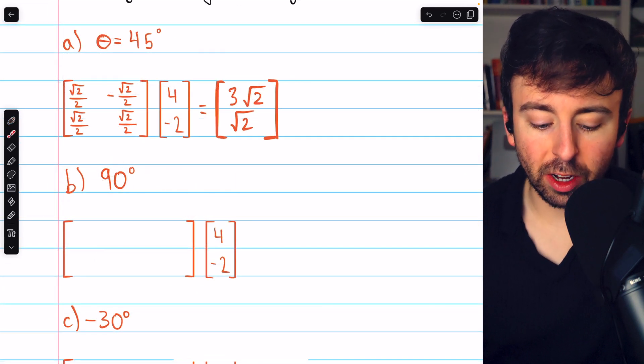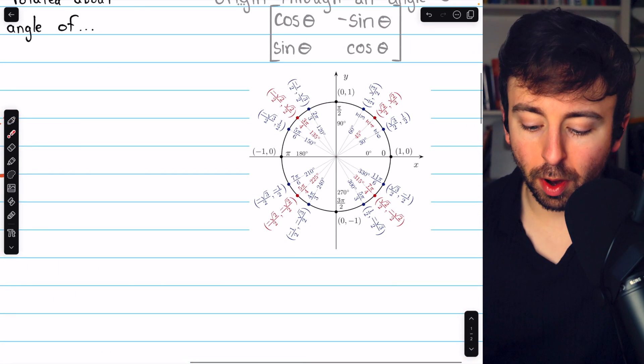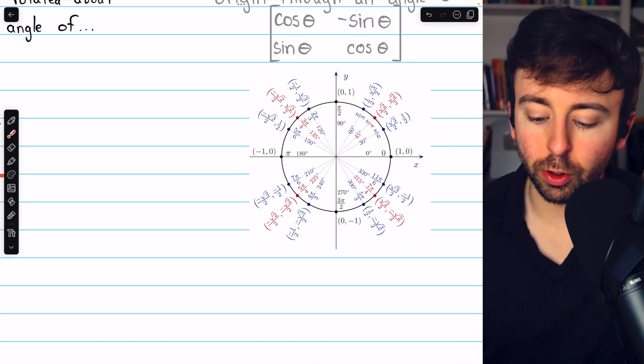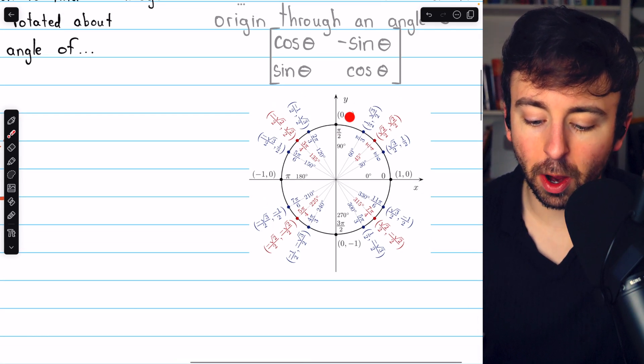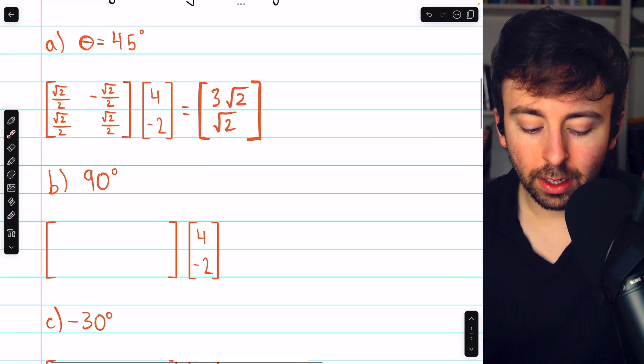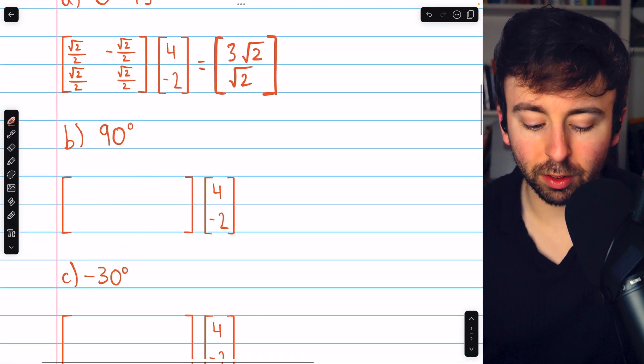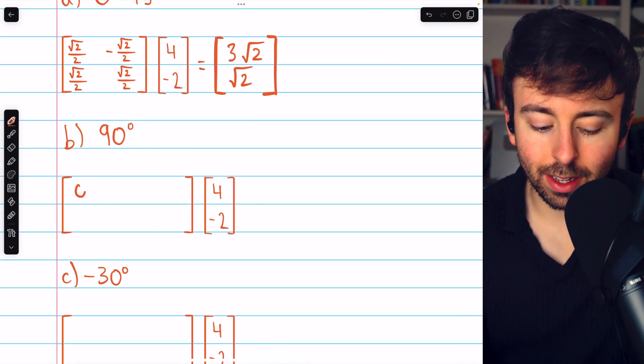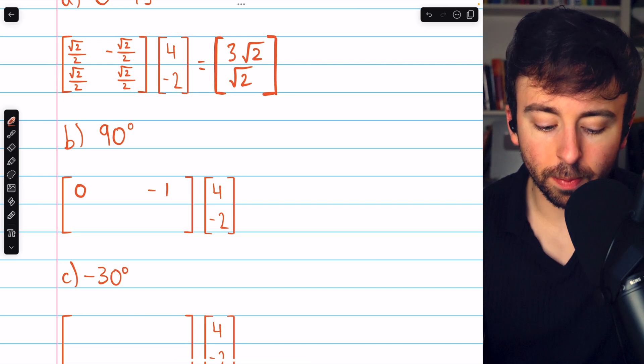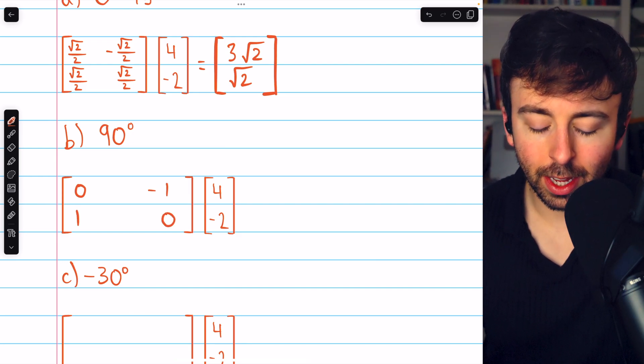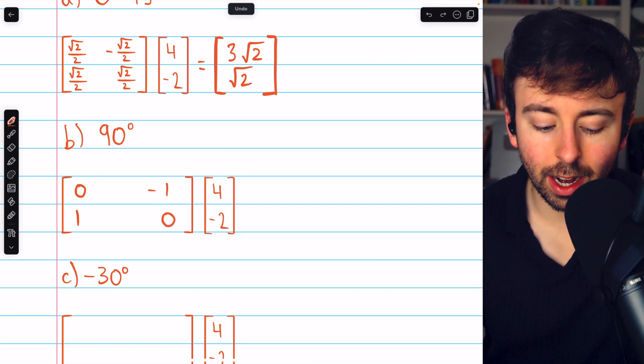Next, let's carry out a rotation of 90 degrees. You probably recall that at π/2, cosine is 0 and sine is 1. So the matrix for this transformation is going to be [0, -1; 1, 0]. That's cosine, negative sine, sine, sine, cosine.